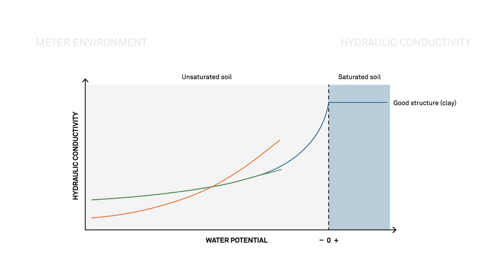Let's add two more soil types to this graph: structureless sandy soil and poorly structured clay. You can see the structure of the soil has a massive impact on its hydraulic conductivity.